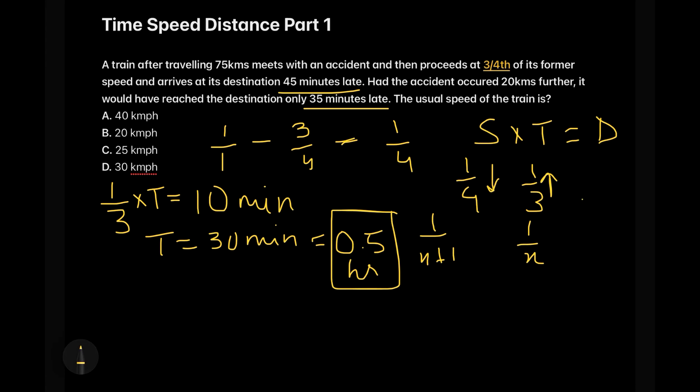So for finding out the distance, we need to understand the question first. The question says that had the accident occurred 20 kilometers further, then the time would have changed. So this change in the time, these 10 minutes, is actually accounting to the change in the distance of 20 kilometers.